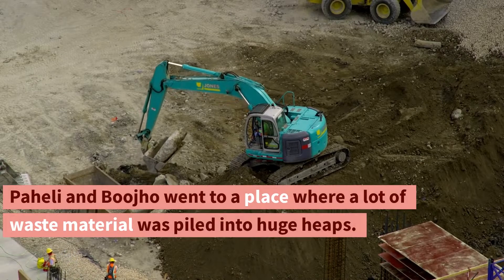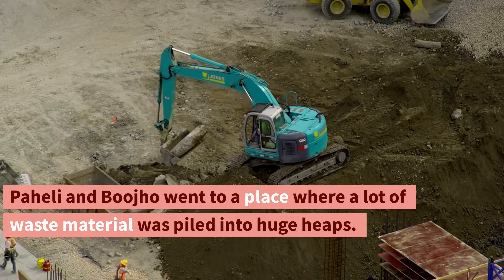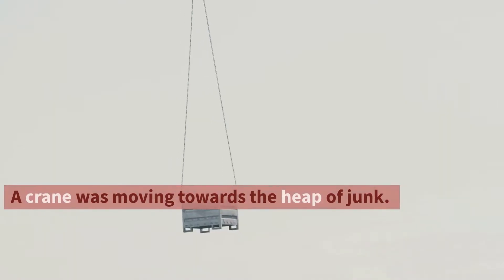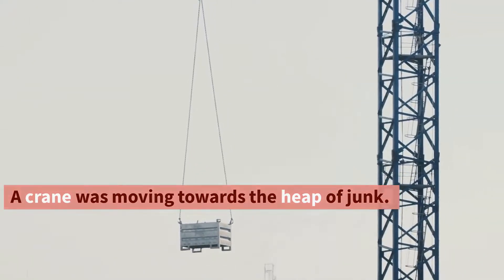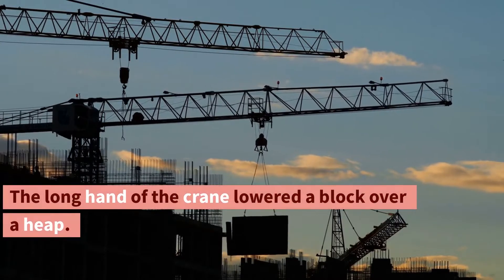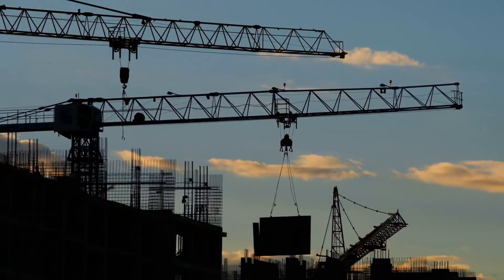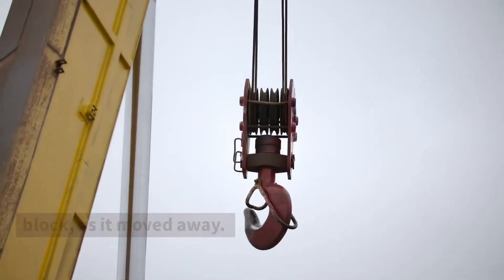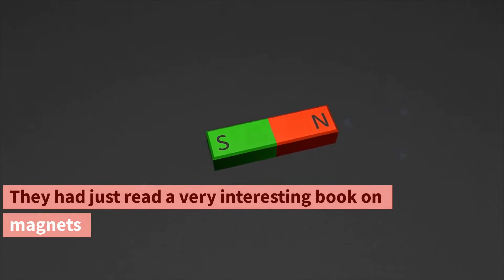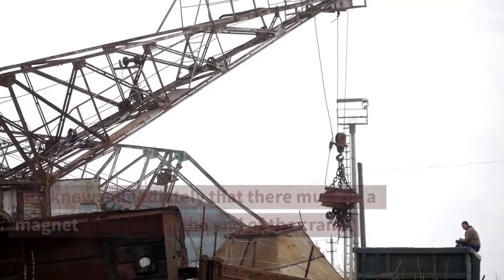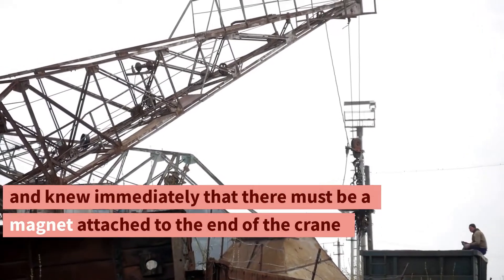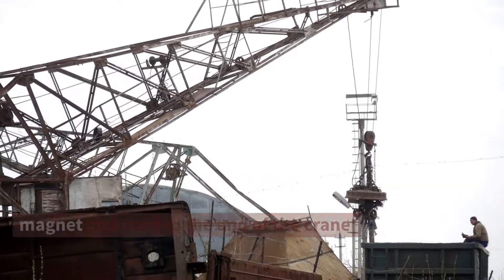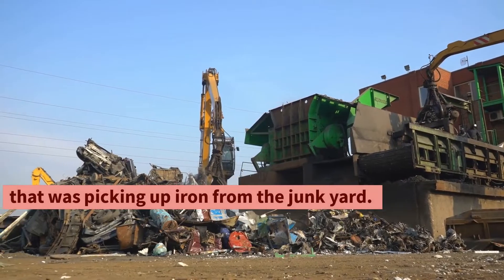Paheli and Bujo went to a place where a lot of waste material was piled into huge heaps. A crane was moving towards the heap of junk. The long hand of the crane lowered a block over a heap. Many pieces of iron junk were sticking to the block as it moved away. They had just read a very interesting book on magnets and knew immediately that there must be a magnet attached to the end of the crane that was picking up iron from the junkyard.